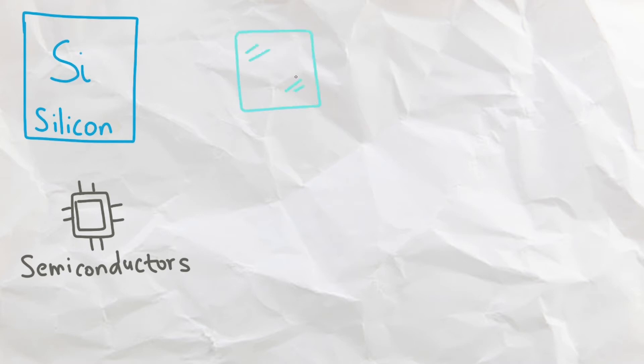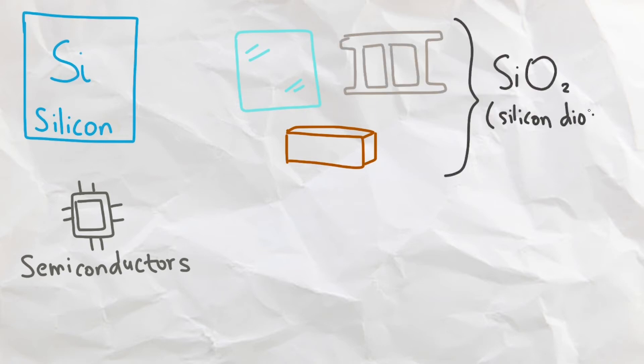However, not only is silicon useful in that industry, it is also used to make many building materials such as glass, bricks, and concrete, because they are made from silicon dioxide, which we know as just ordinary sand.